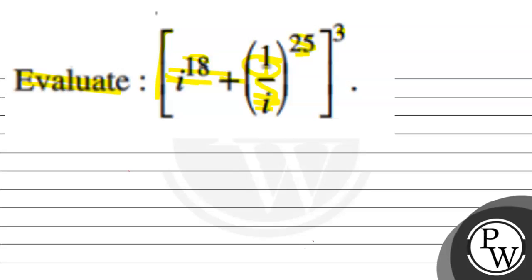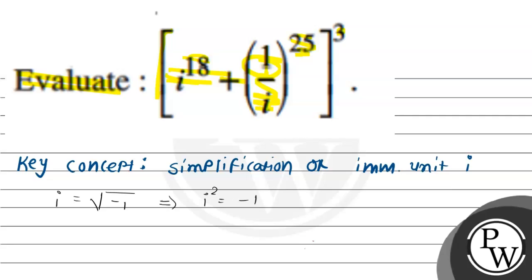So let's first consider the key concept: the simplification of imaginary unit i. As we know, i is equal to square root of minus 1. That implies i squared is equal to minus 1.